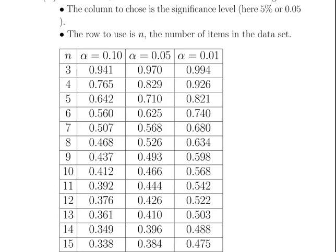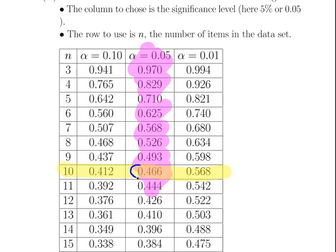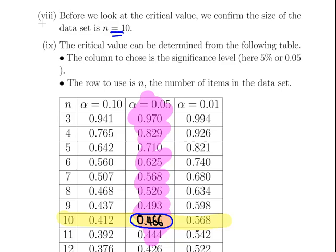Now we go into the Dixon Q tables. We are using alpha equals 0.05 and the size of the dataset is 10. The critical value we are interested in is 0.466. So 0.466 is our critical value.